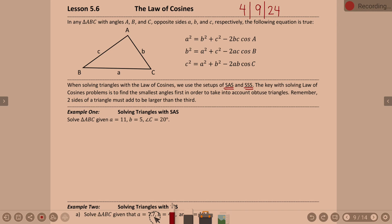You will always want to find the smallest angles first if you have a choice. It can and will make a difference. When you hit the cosine button on your calculator, it's automatically going to find the quadrant one angle. If that angle is supposed to be obtuse, your calculator is not going to find it. So the easiest way to find the largest angle is to make it the last angle you find — by subtracting from 180.